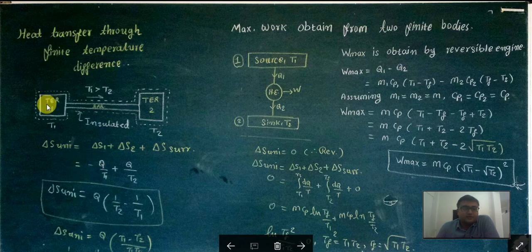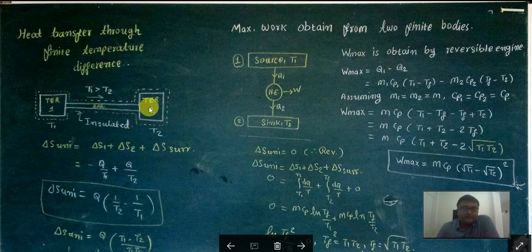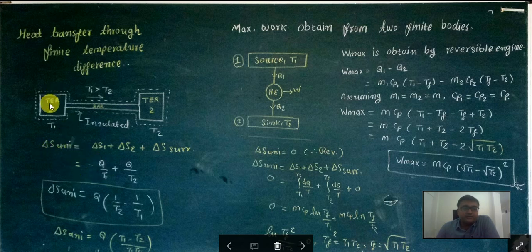Thermal energy reservoir 1 is rejecting heat to thermal energy reservoir 2. That means T1 is greater than T2, and the heat is rejected from T1 to T2. Whenever we are using the thermal energy reservoir, the equation would be Q upon T. So from the first body, heat is rejected, that's why it is minus Q by T1. And for the second body where heat is added, it is Q divided by T2.